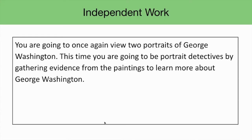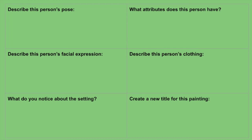For the main learning activity, ask students to once again view two portraits of George Washington. This time, they will be portrait detectives, gathering evidence from the paintings to learn more about George Washington. The Portrait Detectives Graphic Organizer includes the following prompts: describe this person's pose; describe this person's facial expression; what do you notice about the setting; what attributes does this person have; describe this person's clothing; create a new title for this painting. Students can record responses directly on the slide, use the printed graphic organizer from the student workbook, or recreate it in their social studies notebook.